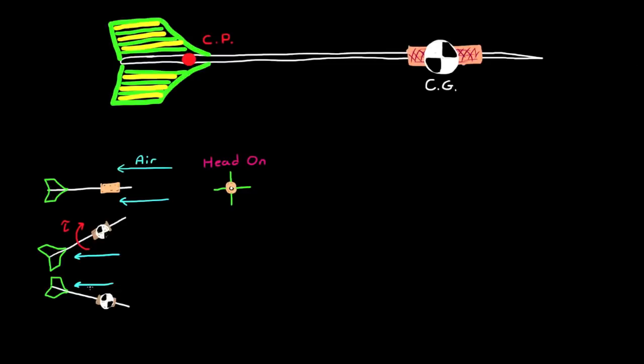And the dart will oscillate back and forth about this equilibrium point until the oscillations are damped from the loss of energy through friction. This is similar to a weather vane that rotates back and forth to align itself with the wind. This system is stable because the torque generated by the air pressure tends to rotate the dart back to its starting equilibrium point.